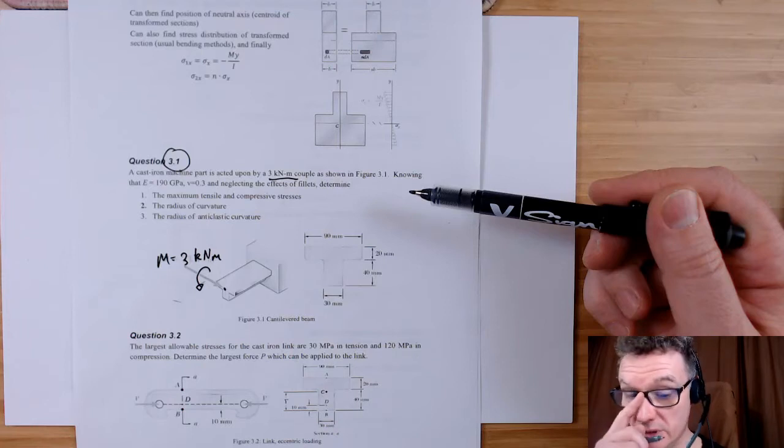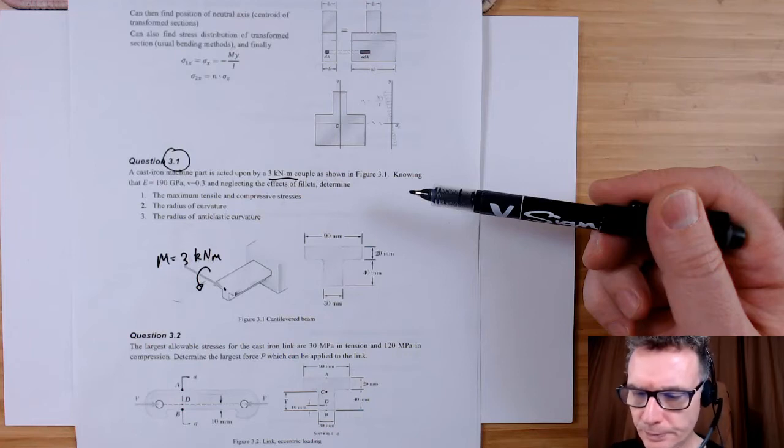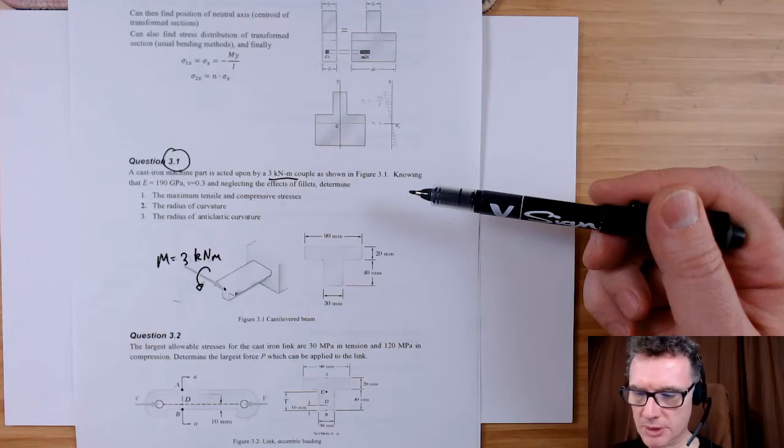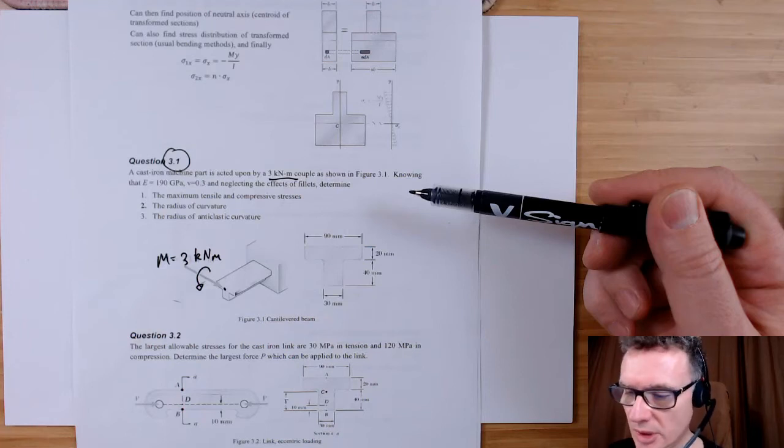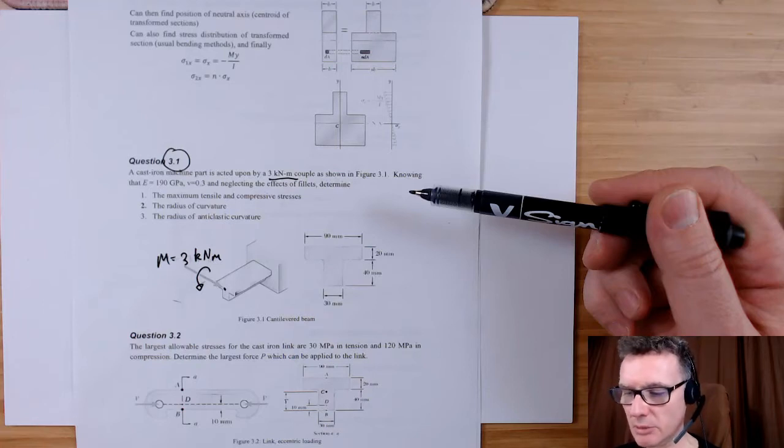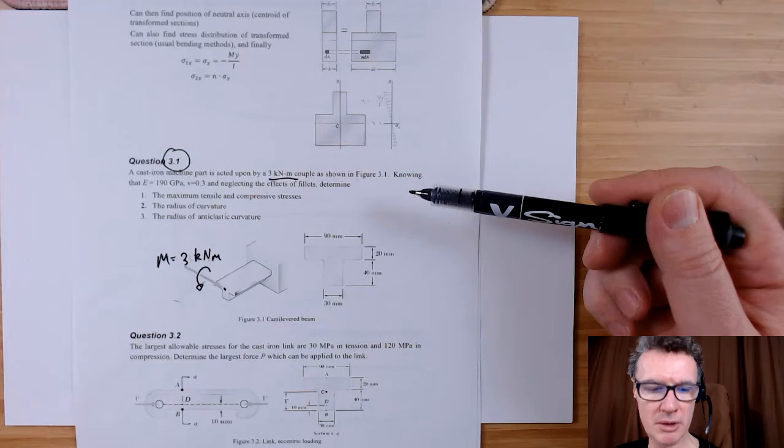So what do we do when we're starting? The starting point for a T-beam will be to work out where the centroid is. I am going to call the bottom bit my bottom section and then top section. To work out centroids, I will do y-bar or neutral axis, which is sum of areas for their particular sections multiplied by their particular centroids, divided by the sum of areas.